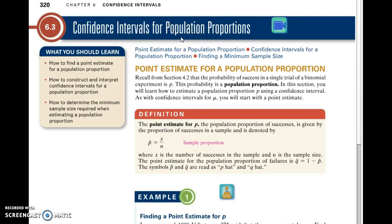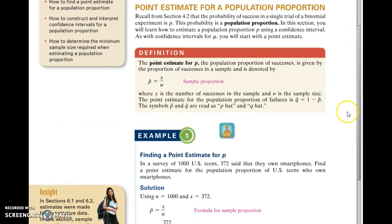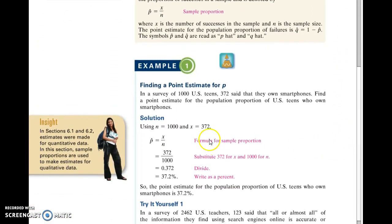Since we're dealing with proportions, how we calculate our point estimate is a little bit different. We're not taking the mean of a sample. We look at our sample and we take the total number of successes divided by the amount in the sample. We get our point estimate that way.